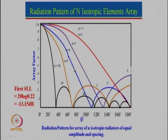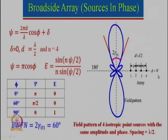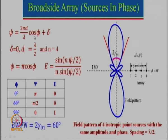Now let us look at what happens when we change the phase for a specific number of elements. We take 4 elements with spacing d=λ/2. For broadside, δ=0, so ψ = 2πd/λ·cosφ + δ reduces to ψ = π·cosφ. The array factor is sin(Nψ/2) divided by N·sin(ψ/2). Let us try to plot the radiation pattern.